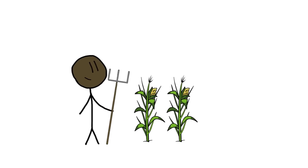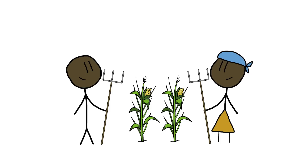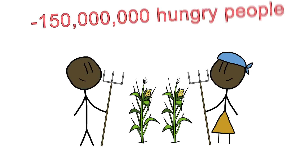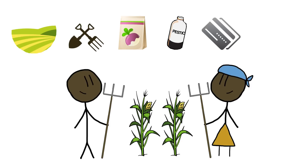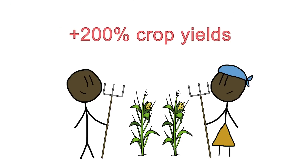Starting with the first point: the plan to double agricultural production might not be what you think. According to the Food and Agriculture Organization, if women farmers had the same access to farming resources as men, the number of hungry people in the world would be reduced by 150 million. The UN plans to provide all small-scale food producers — especially women and small family farms — equal access to land, tools, seeds, pesticides, credit, and markets to sell their produce.